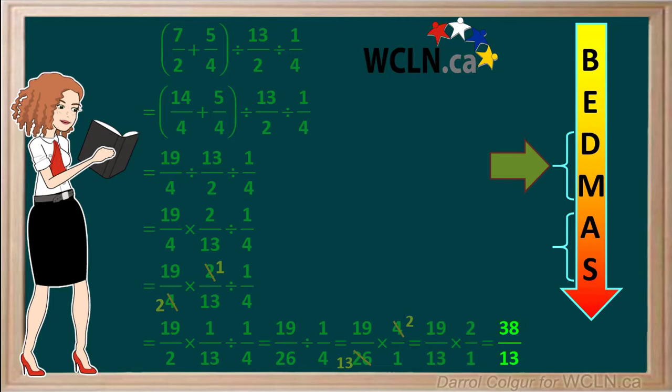38 over 13 is an improper fraction, so it can be converted into a mixed number.